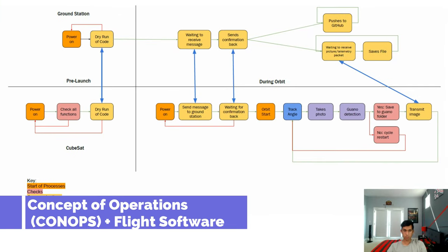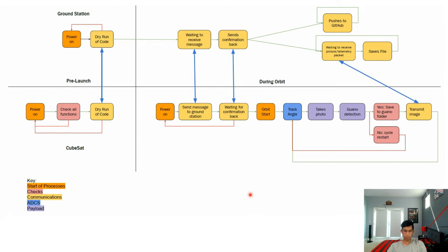We split our ConOps into two phases: the pre-launch phase and the orbit phase. Pre-launch, we checked all of our code and all of our functions to make sure that everything on both the ground station and the CubeSat functioned as expected. Once the orbit started, on the ground station side, there were two processes running — one receiving the pictures and telemetry packets and saving them, and the other pushing whatever it received to GitHub.